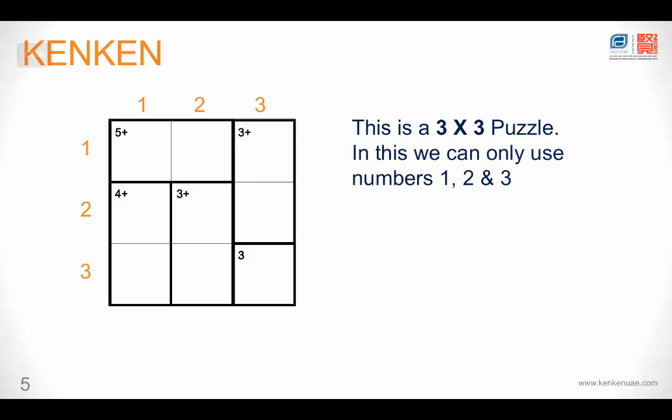Okay, this brings us to the first rule of KenKen Puzzles. The first rule stipulates that if it's a 3x3 KenKen Puzzle, the only numbers that we can use to fill out the boxes are 1, 2 and 3. Similarly, if it's a 4x4 KenKen Puzzle, we can use the numbers 1, 2, 3 and 4.